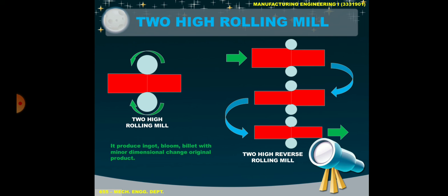It generally produces ingot, bloom, billet, with minor dimensional change in the original product. Here the thickness of the outgoing product is very slightly less than the original one, so it is only useful for starting products like ingot, bloom, and billet.